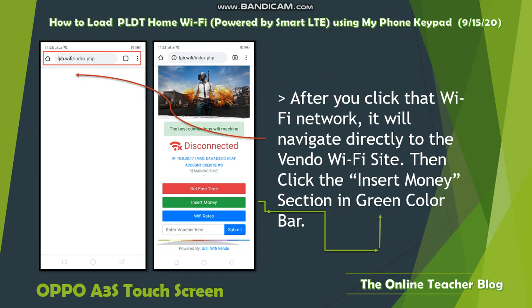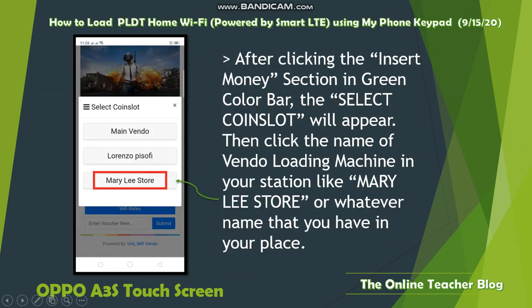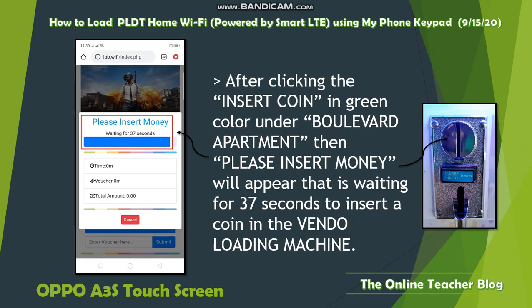You will see the 'Insert Money' section highlighted in green — this is where you need to put the URL. After clicking the 'Insert Money' section in the green color bar, the 'Select Coin Slot' option will appear. Click the name of the vendor loading machine at your station, such as 'Mary Lee Store' or whatever name is available in your place. We have options here like 'Main Window', 'Lorenzo', 'Pizzo Fi', and 'Mary Lee Store'. Select whichever loading station is available to you.